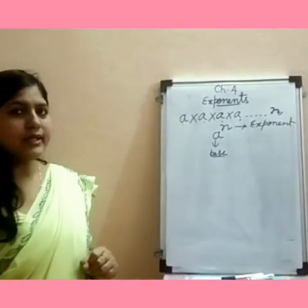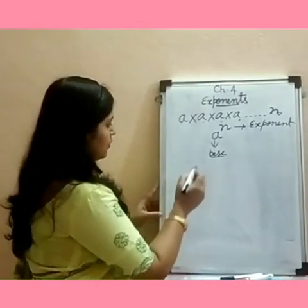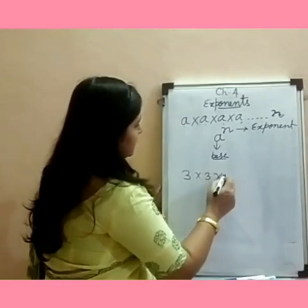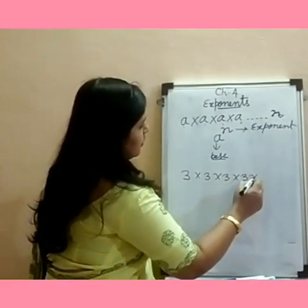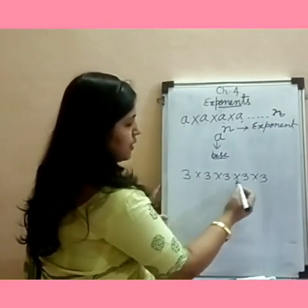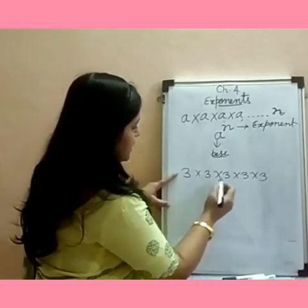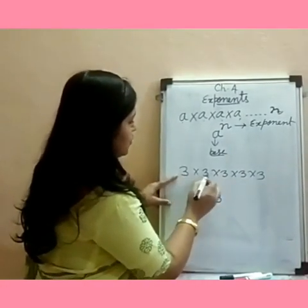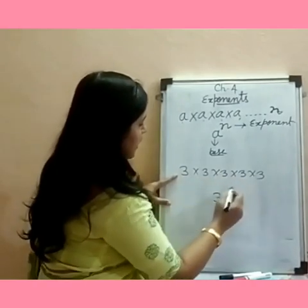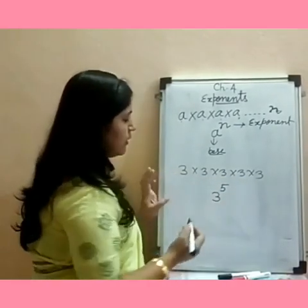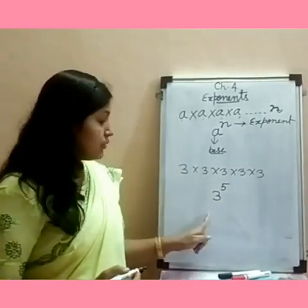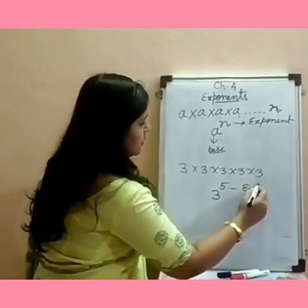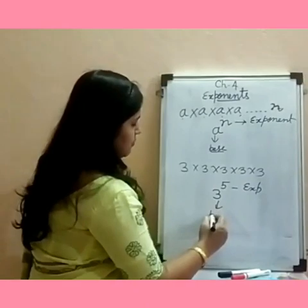Let's look at an example with numbers. When the number 3 is multiplied 5 times, the base is 3, and it is repeated 5 times. We read it as '3 raised to the power 5'. The 5 is the exponent and the 3 is the base.